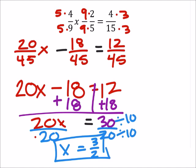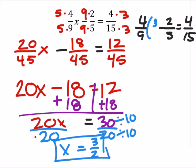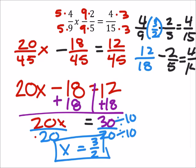But of course, we should check this. So let's go ahead and check. So this was 4 ninths x minus 2 fifths equals 4 fifteenths. And so we're going to replace the x with the 3 halves. So 4 times 3 is 12, and 9 times 2 is 18. And we're going to subtract 2 fifths. And this should equal 4 fifteenths.